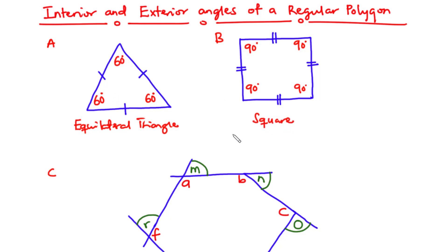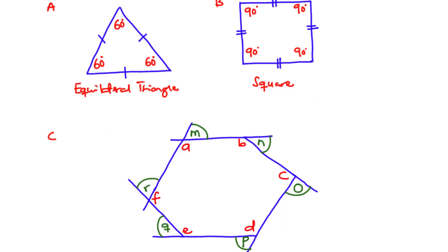In figure C, we have a hexagon — a regular polygon with six sides: one, two, three, four, five, and six. So six sides.